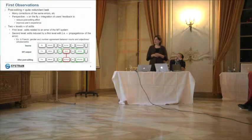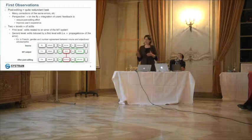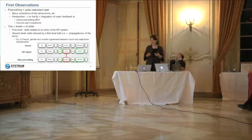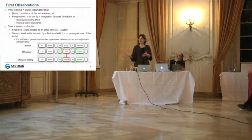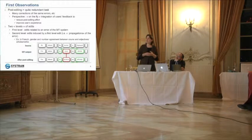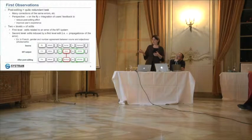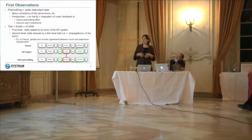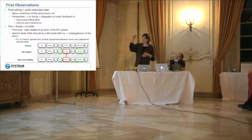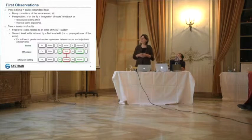We also distinguish two levels of edits. The first level is an edit related to an error made by the machine translation system. The second level of edits are edits induced by the first level edits — this is what we call propagation of the error. In French you will find a lot of second-level edits like that, when you have gender and number agreement between nouns and adjectives.